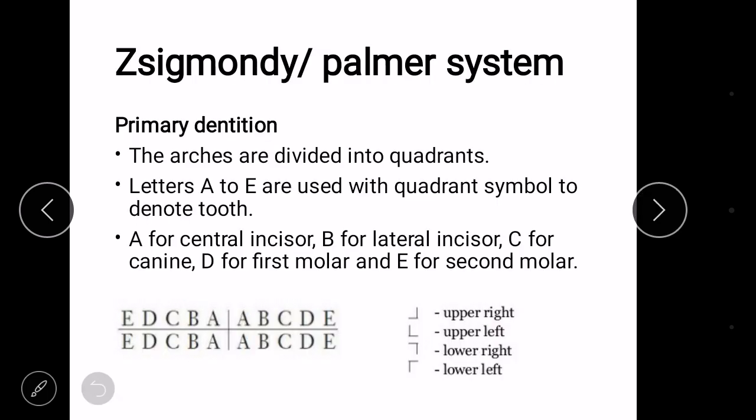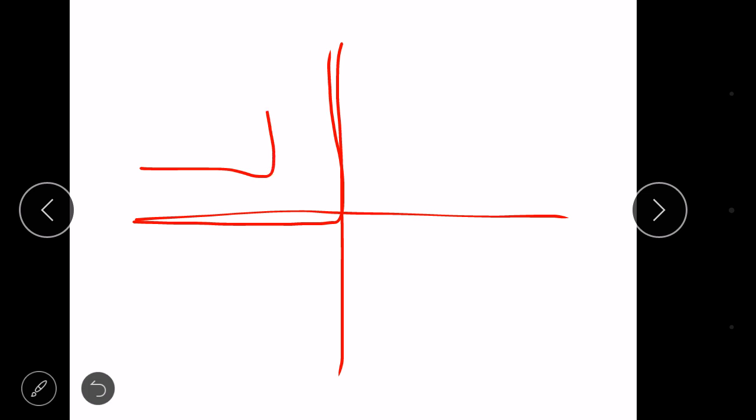Coming to our first system, that is Zsigmondy Palmer System. It is a symbolic system where symbols are given to each quadrant. It's not very difficult to remember the symbols of the quadrants because the boundary of the quadrant is what makes its symbol. So for maxillary right quadrant, the symbol is this, maxillary left, mandibular left, mandibular right.